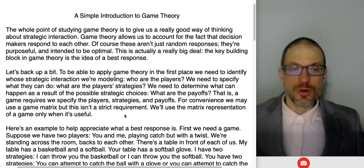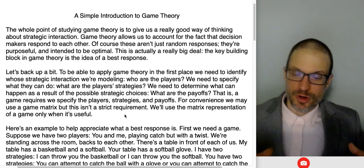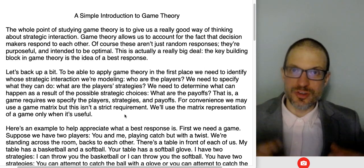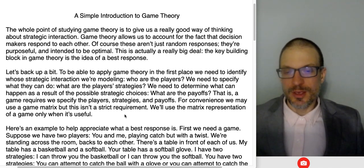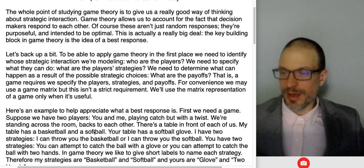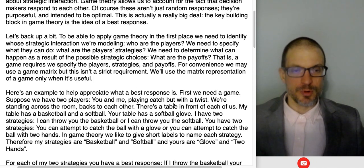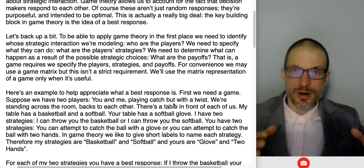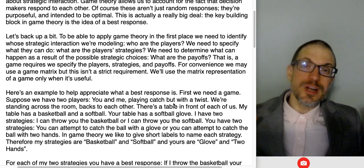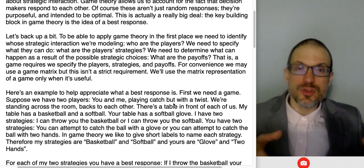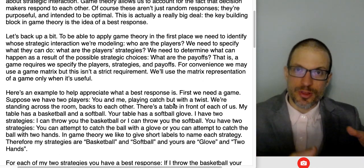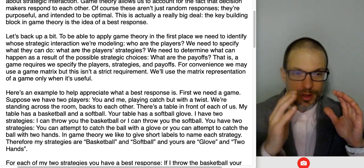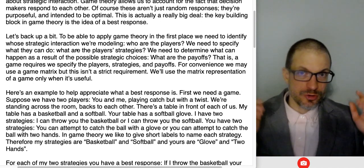We want to capture the strategic interdependence of the combination of strategies the two players are selecting. The example I like to use is a particular game: suppose we have two players playing catch, but with a twist. Envision a situation where you and a partner are standing with your backs to each other, 20 feet away. In front of each of you is a table. In front of the first person is a table that's got a basketball and a softball.